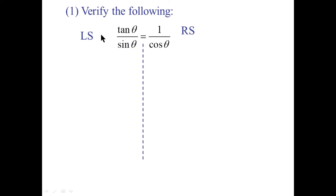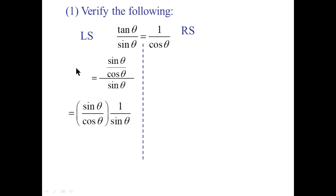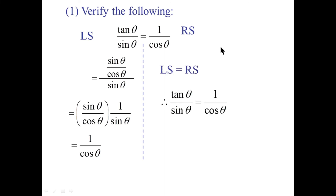Tangent we know to be sine over cosine, so we'll turn tangent into sine over cosine. Dividing by sine — which is sine over 1 — we invert and multiply: sine over cosine times 1 over sine. The sines cancel, and we have 1 over cosine. We notice that this 1 over cosine matches the right side, so we can state: therefore, left side equals right side. Tangent theta over sine theta does indeed equal 1 over cosine.